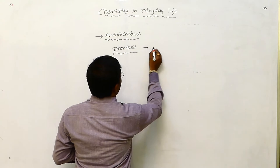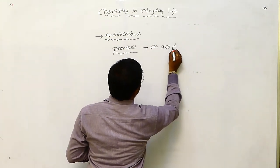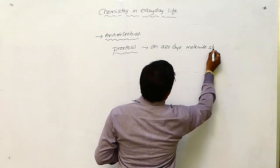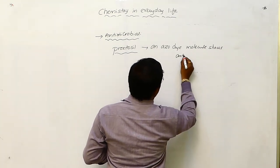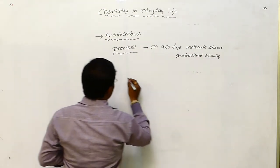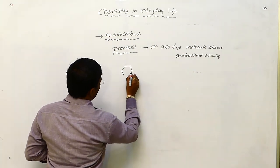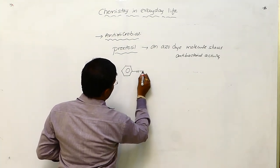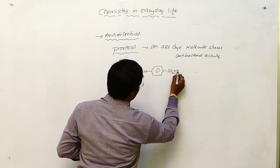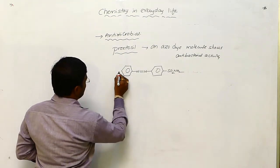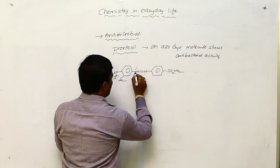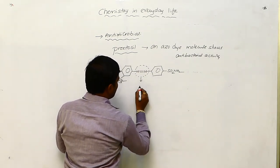Prontosil is an azodimolecule that shows antibacterial activity. What is an azodimolecule? In the structure of Prontosil, azodibonds are present, which have N double bond N, SO2, and NH2 groups. This N double bond N linkage is called an azodibond.